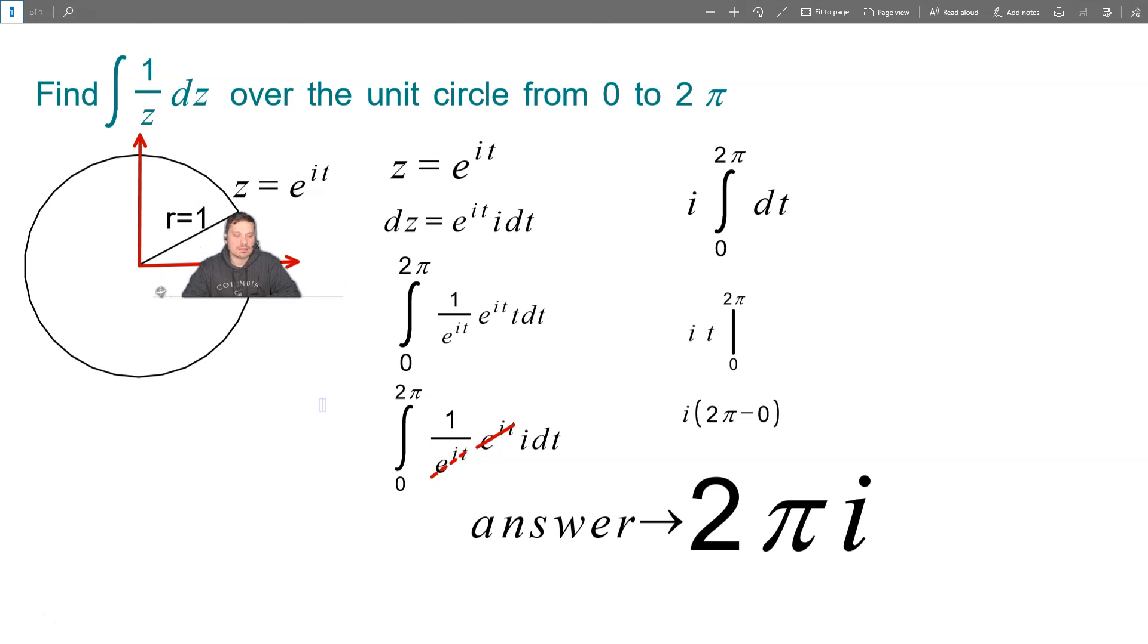That means that the complex number at any point can be represented as z equals e to the i t for different values of t. Why do I want to know this? Because what I can do is I can replace z with e to the i t because they're equivalent. So I'm going to proceed as follows.